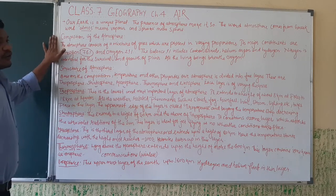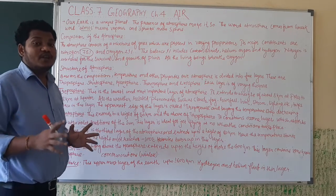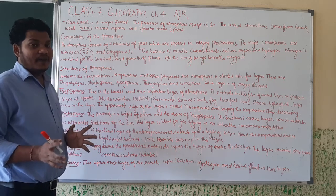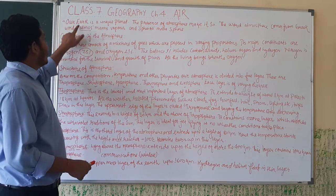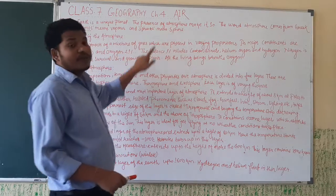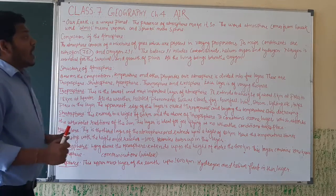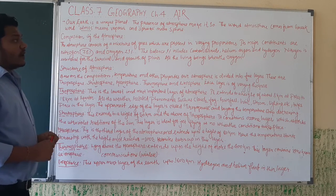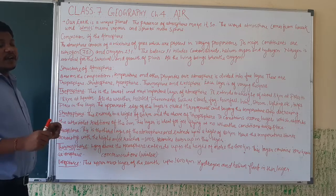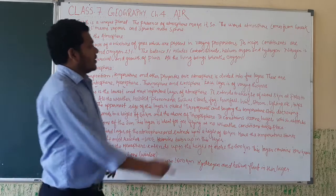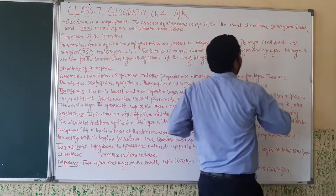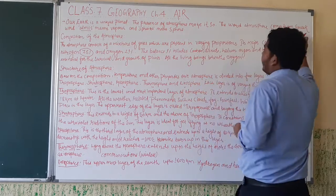Before we talk about why our Earth is called a unique planet — our Earth is called a unique planet because of the presence of the atmosphere. The word atmosphere comes from a Greek word: 'atmos' means vapor.